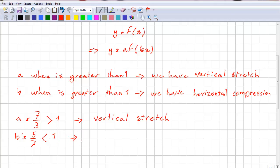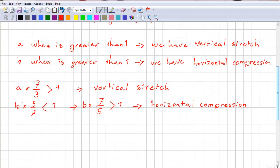So we change it to 7/5, which is greater than 1, giving us a horizontal compression. We just plug a and b into our function, so it's going to be (7/3)*f((7/5)x). And that's it.